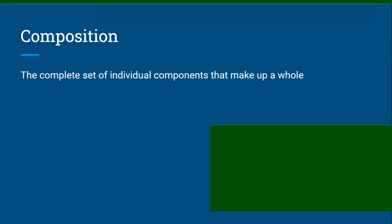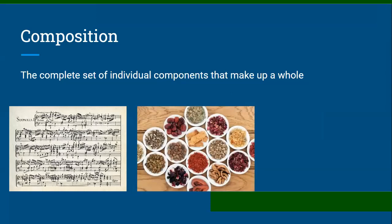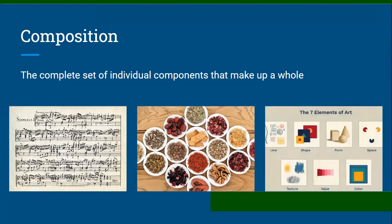First, very generally, what is composition? It's the complete set of individual components that make up a whole. It's not only an idea we use in fuels and biomass and combustion — you can think of music made up of many notes and a structure that composes a song, individual ingredients for a meal composed to make food, and even artwork has these ideas of composition.